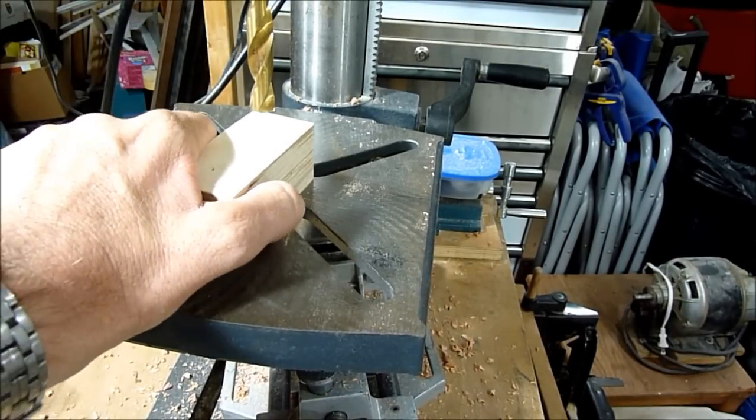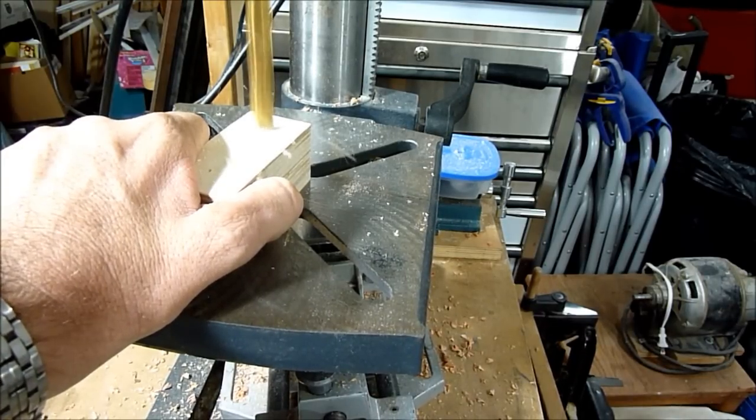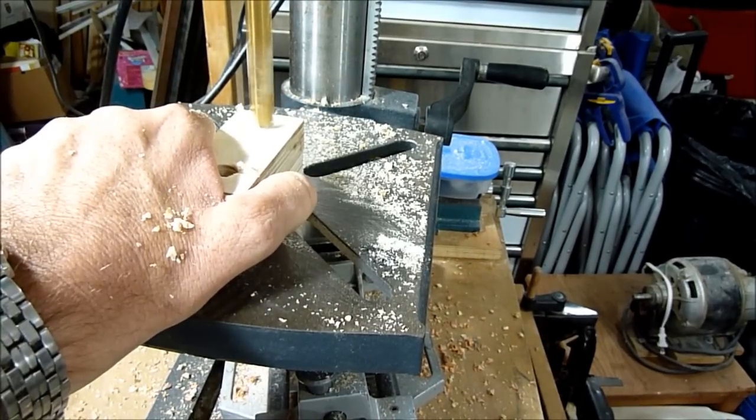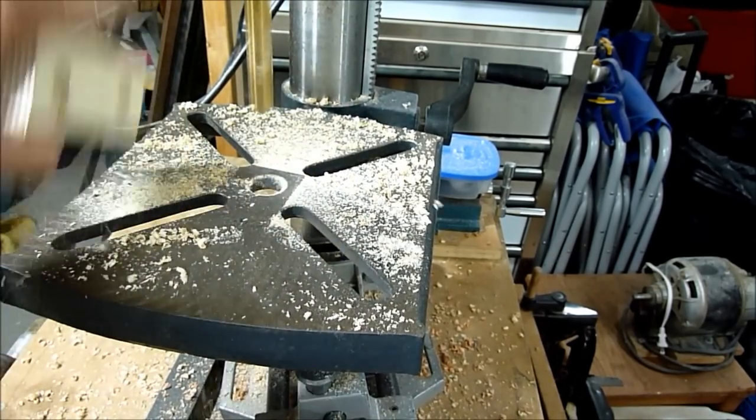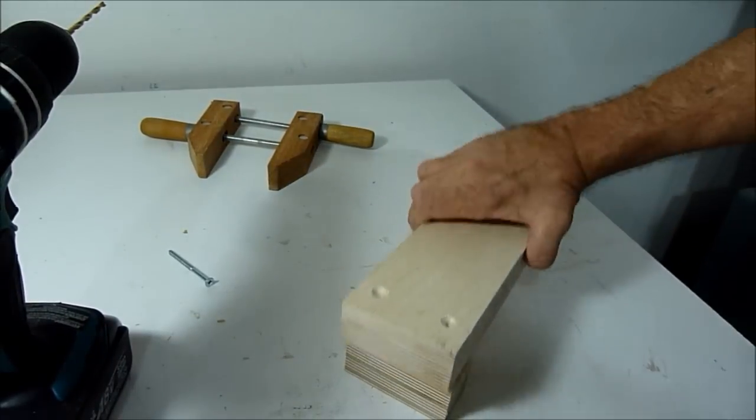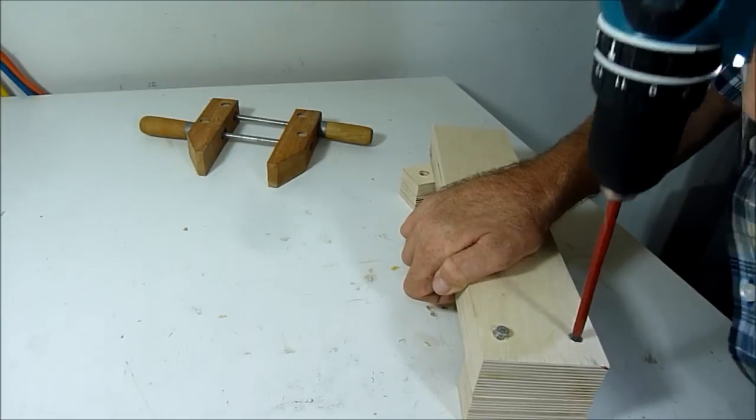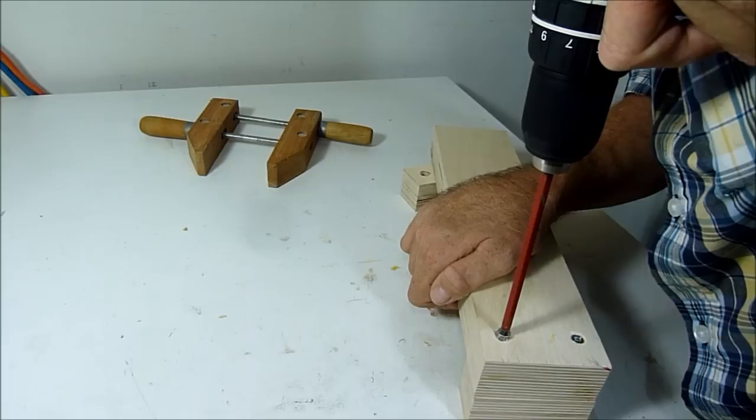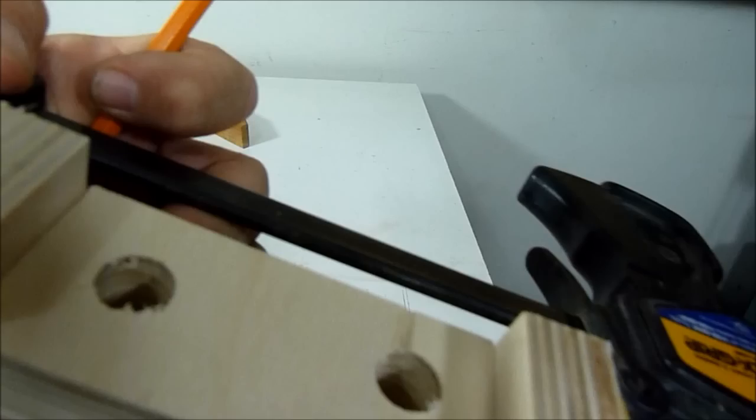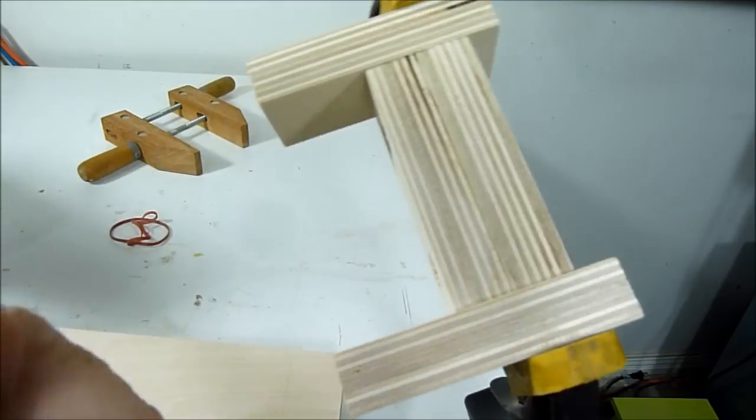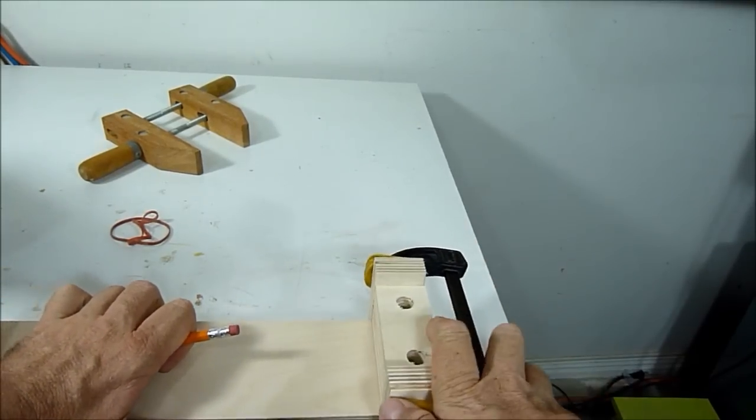Now I'm going to cut the holes for the dowels. I'm now going to attach one of the ends. I've temporarily added these two blocks as guides so I can make markings for the holes for the clamp.